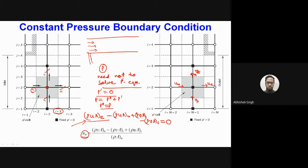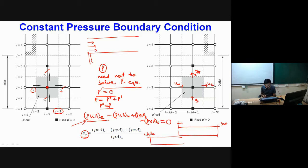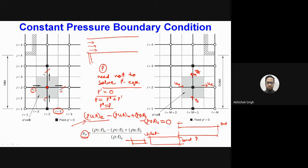A student asks whether specifying velocity gives us pressure — yes, that is the converse. For a pipe flow, you can specify inlet velocity and outlet pressure, or both as constant pressure conditions. You can also specify both inlet and outlet as constant pressure. However, at a single boundary you must only supply one type — either velocity or pressure — not both, otherwise the problem is over-constrained.